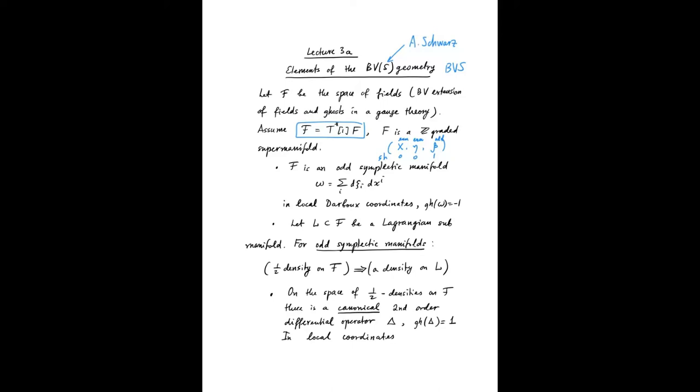F is an odd symplectic supermanifold, Z-graded, and the symplectic form can be written like this in local Darboux coordinates. Let's consider a Lagrangian submanifold L in F. For an odd symplectic manifold, there is a remarkable fact.